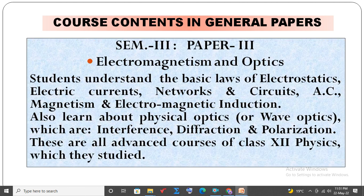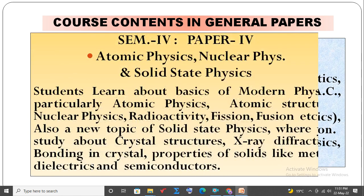In Semester 3, Paper 3: Electromagnetism and Optics. Students understand the basic laws of electrostatics, electric currents, networks and circuits, alternating currents, magnetism, and electromagnetic induction. They also learn about physical optics or wave optics, which includes interference, diffraction, and polarization. These are all advanced level courses of class 12 physics.